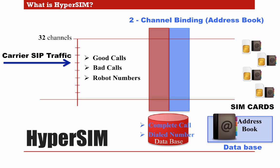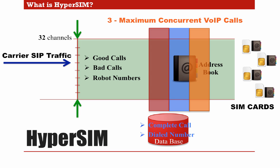Allowing the maximum amount of incoming concurrent VoIP calls to the gateway will prevent channel binding from working efficiently, since for the same number to go out the same module, that module needs to be free. That will never happen if the gateway is always handling the maximum possible number of calls. This is where the third element comes in: maximum concurrent VoIP calls limits the amount of incoming calls so as not to overload the gateway, prolonging the life expectancy of the SIM cards. Maximum concurrent VoIP calls complements channel binding by limiting incoming VoIP traffic, enabling channel binding to work properly.